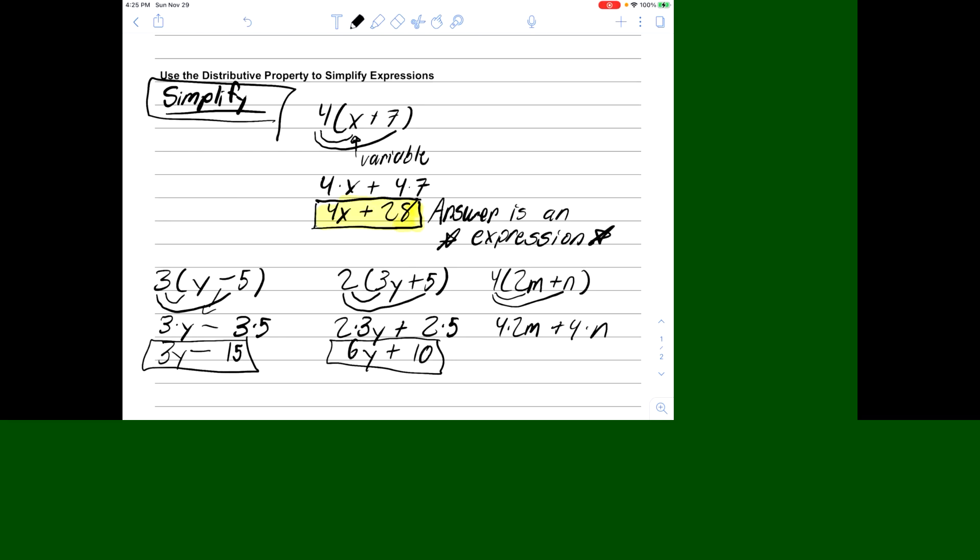4 times 2m is 8m. 4 times n, we don't know what n is, so that'll just be 4n. And then we have a plus sign. And again, I don't know what m is, and I don't know what n is. So I can't add this stuff together. So this is my answer.